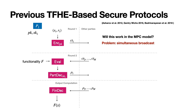In the first round, party one broadcasts its ciphertext to all other parties, and then it needs to store all the other parties' broadcasted ciphertexts in order to run the evaluation algorithm. We have the same problem in round two, except with the partial decryptions.